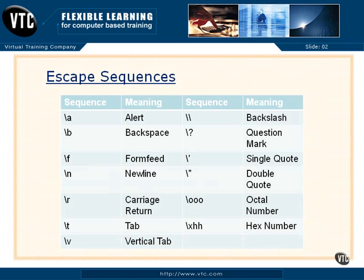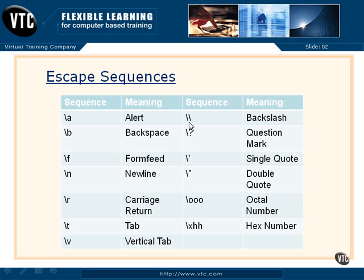Here's a bunch of escape sequences generally used in constants or string constants. You've already used one of them. Notice backslash A for alert, and there's backspace, form feed, and all sorts of other things. You've already used backslash N for new line. Backslash R is a carriage return, and there's tab. You can also use backslash followed by three digits of an octal number, or backslash X and a hexadecimal number, to create sequences of special codes in your constants.